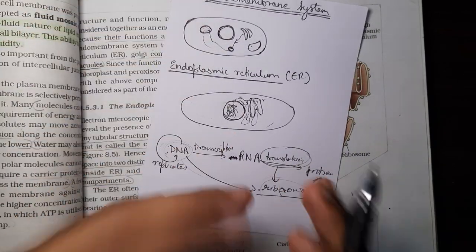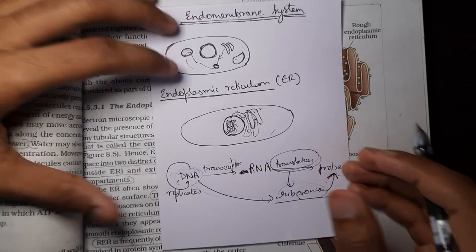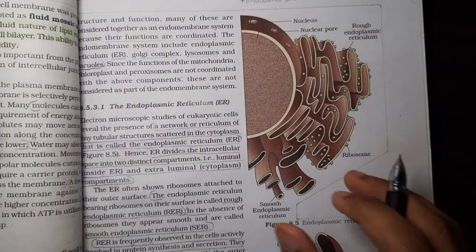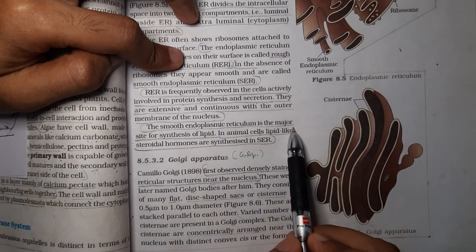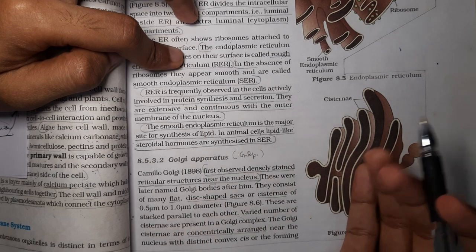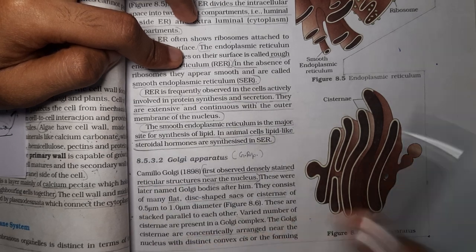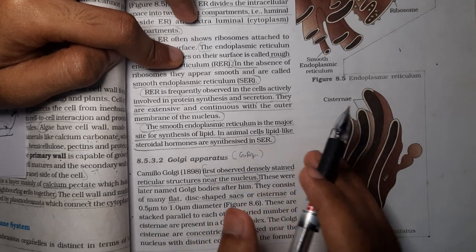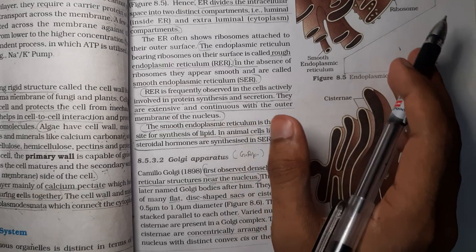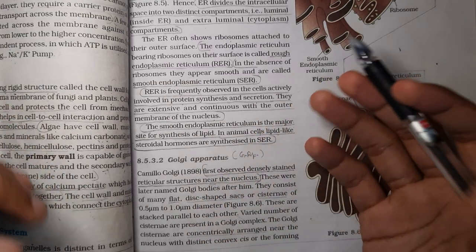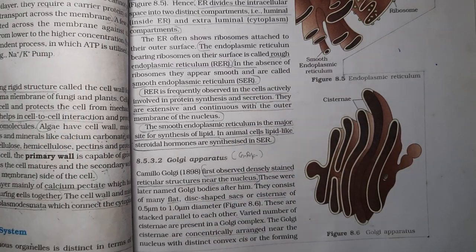If you didn't understand, don't worry — I'll explain it again after we learn about the nucleus. The smooth endoplasmic reticulum is the major site for synthesis of lipids. Lipids are essentially hydrocarbon chains, non-polar in nature. In animal cells, lipids like steroidal hormones are synthesized in the smooth endoplasmic reticulum. With that we have finished understanding the endoplasmic reticulum, and now we are going to learn about the Golgi apparatus in the next video.